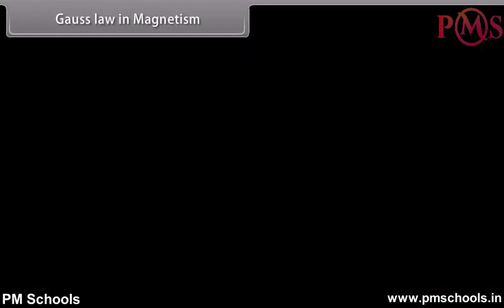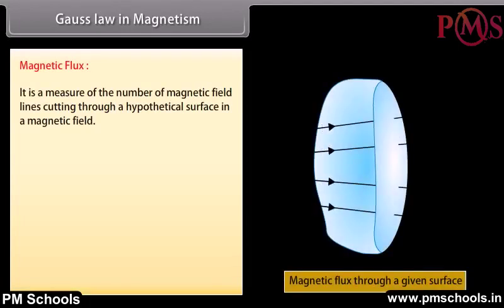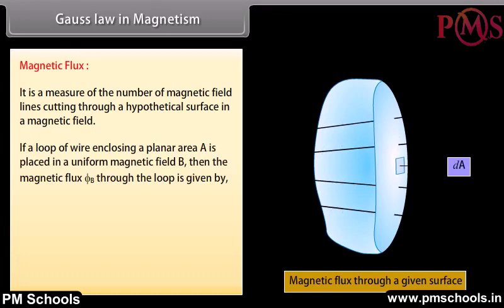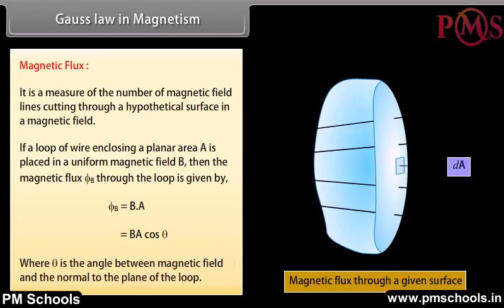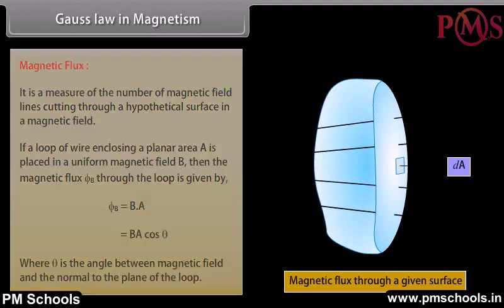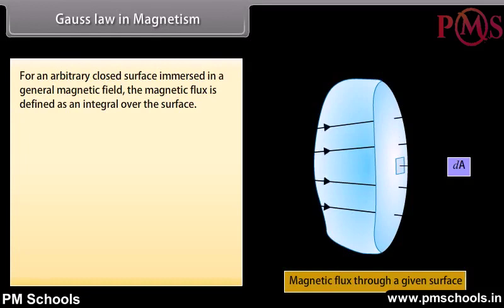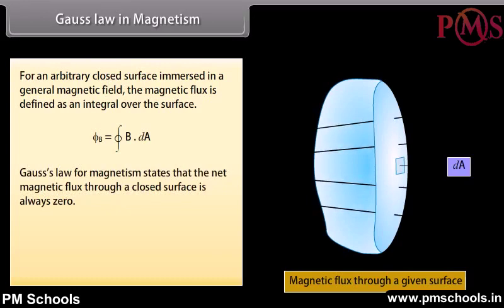Gauss's law in magnetism — Magnetic flux: It is a measure of the number of magnetic field lines cutting through a hypothetical surface in a magnetic field. If a loop of wire enclosing a planar area A is placed in a uniform magnetic field B, the magnetic flux ΦB = B · A = BA cos θ, where θ is the angle between the magnetic field and the normal to the plane of the loop. For an arbitrary closed surface, ΦB = ∮B · dA. Gauss's law of magnetism states that the net magnetic flux through a closed surface is always zero: ∮B · dA = 0. The SI unit of magnetic flux is Weber.